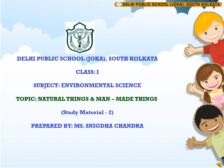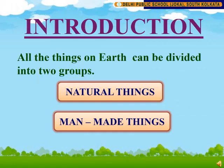In this lesson, we are going to learn about natural things and man-made things. All the things on earth can be divided into two groups: natural things and man-made things.